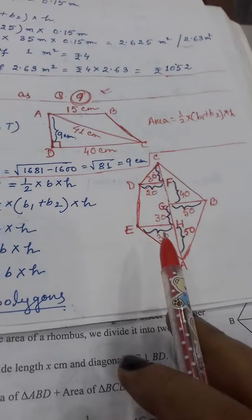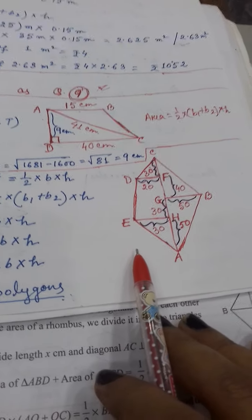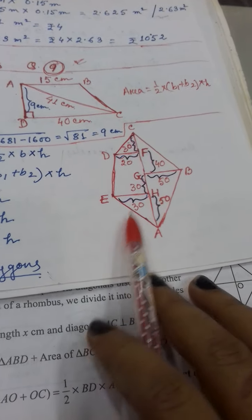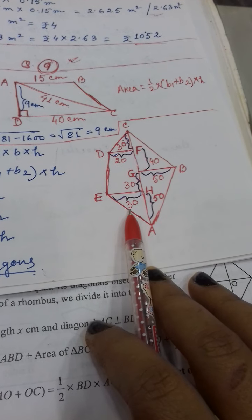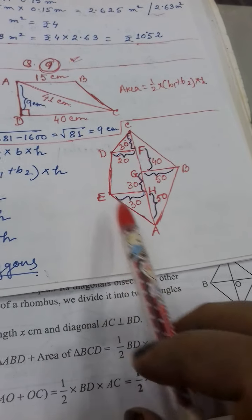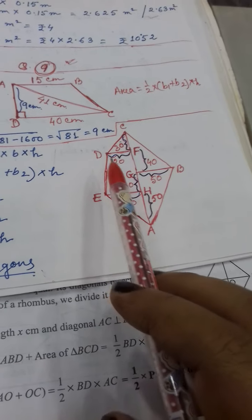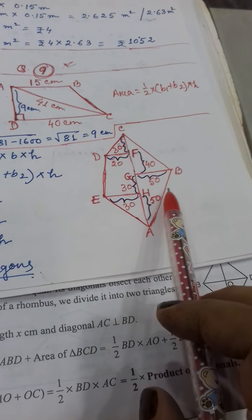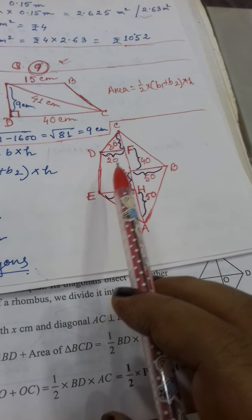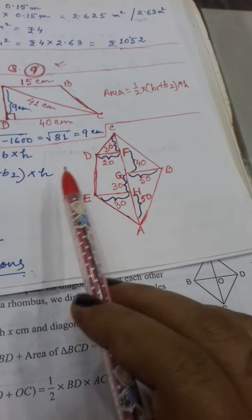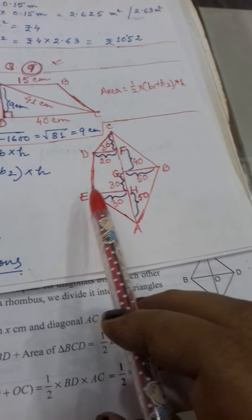Up to trapezium the formulas you have got, but for pentagon, hexagon, heptagon, there is no particular fixed formula. This type of figure is an irregular polygon. So where you will not get any particular formula, what you have to do is make parts of the figure — either in rectangle form, square, triangle, parallelogram, or trapezium. You will first make the parts of the figure according to your comfortable way.